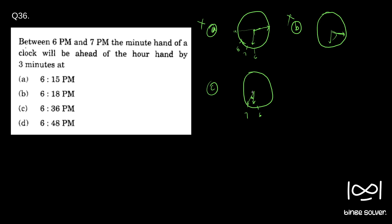For Option D, at 6:48 — this is 7 and this is 6. The minute hand will be somewhere here and at 48 minutes the minute hand will be somewhere like this. So Option D is also wrong. From this you can clearly see Option C is the right answer. This is a rough way to do it.